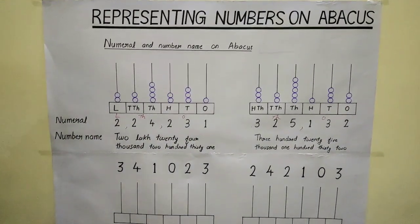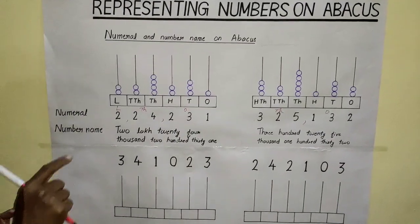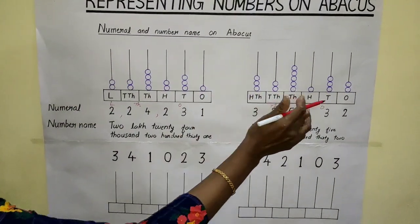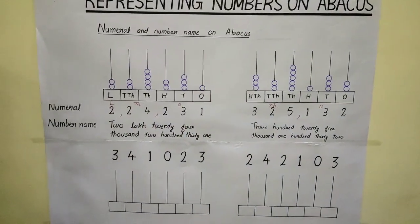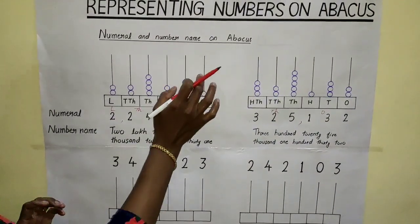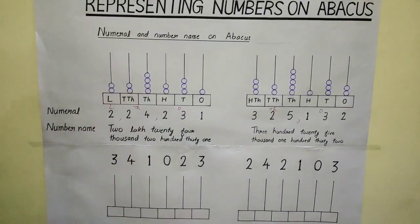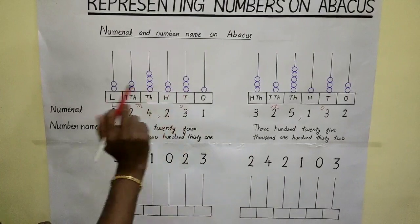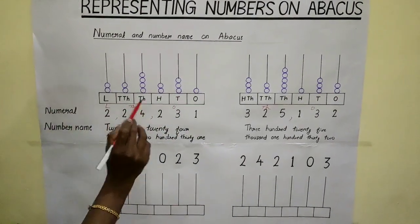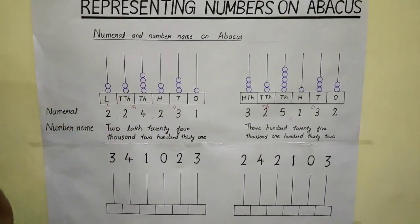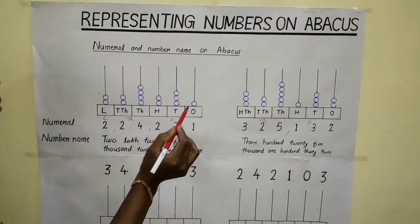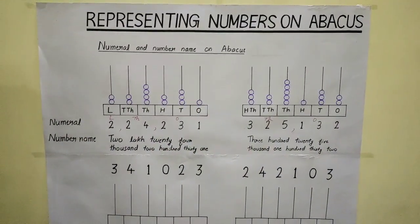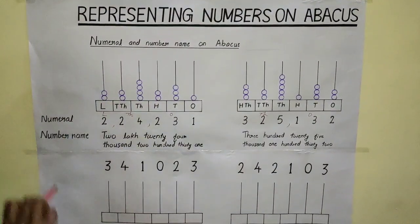First part, we are going to discuss how to write the numeral and number name on each Abacus represented. Abacus has rods and beads on it. The first rod represents the one's place, the next is ten's place, hundreds, thousands, ten thousand, and lakhs. The number of beads on each rod represents the number corresponding to its place.